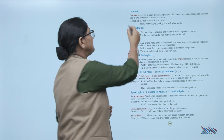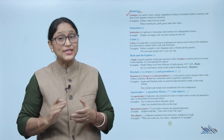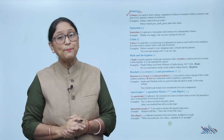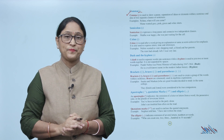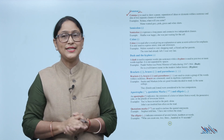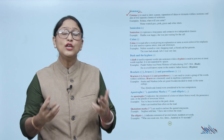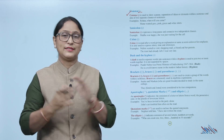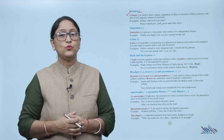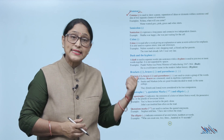The comma is used to show a pause, separation of ideas or elements within a sentence, and also to separate two clauses or sentences. Examples: 'Rohan, when will you come?' 'Manu wanted grey, pink, green, and white shirts.' Next is the semicolon.